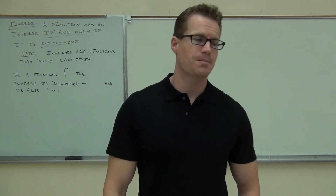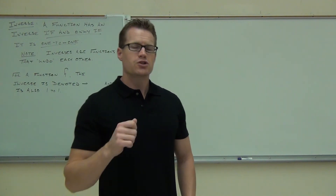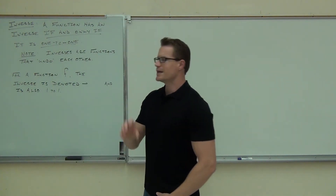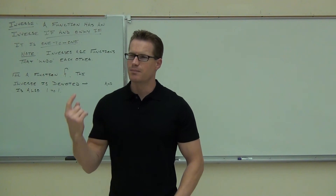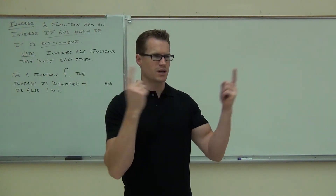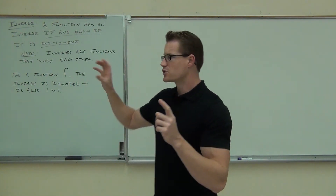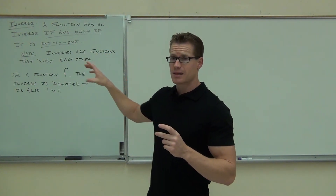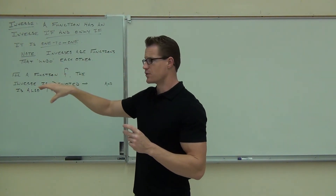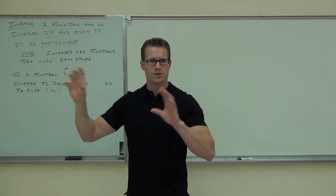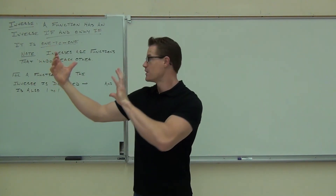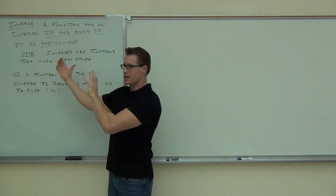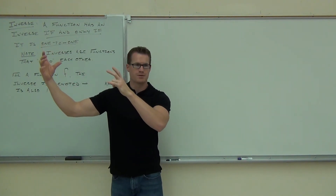Now, the key statement is this: a function has an inverse if and only if it's 1-to-1. That's a biconditional statement — it goes both ways. A function has an inverse if it's 1-to-1, and if it's 1-to-1, it must have an inverse. If a function does have an inverse, it is 1-to-1; and if it is 1-to-1, it must also have an inverse.